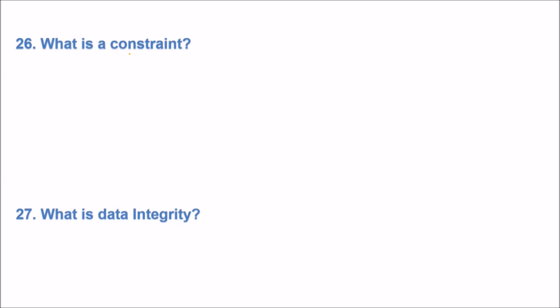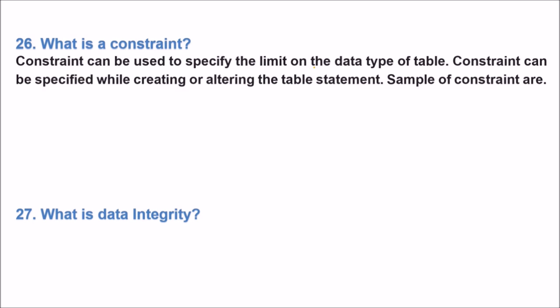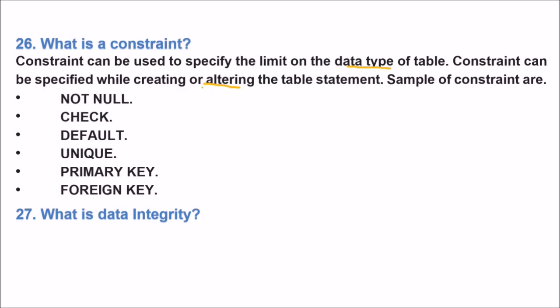If you see the meaning of constraint, it means restricting something or applying some restriction. The constraint can be used to specify a limit on the data type of a table. So constraint can be specified by creating and altering the table. Sample of a constraint can be NOT NULL, CHECK, DEFAULT, UNIQUE. If the constraint is that this particular column or field will be a PRIMARY KEY or a FOREIGN KEY, these are the constraints.